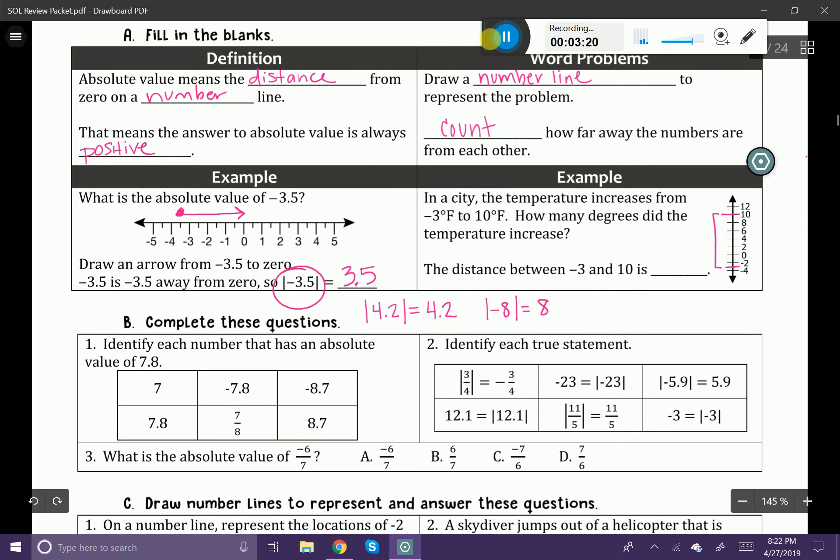So all I really need to do is count the spaces. Now you need to be careful because on this specific number line, it goes by twos. So you can see that if I start at 10 and go to 8, it's dropping by two degrees. So how many spaces away am I?